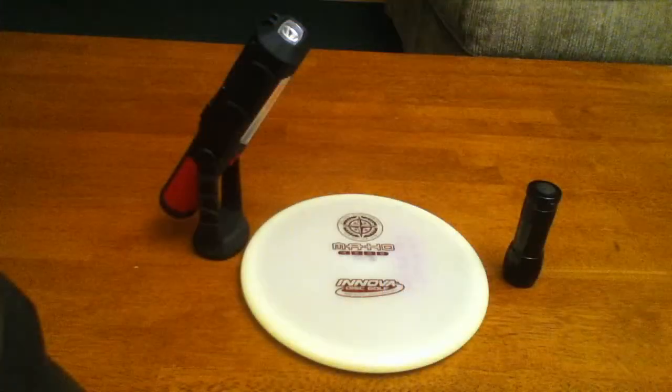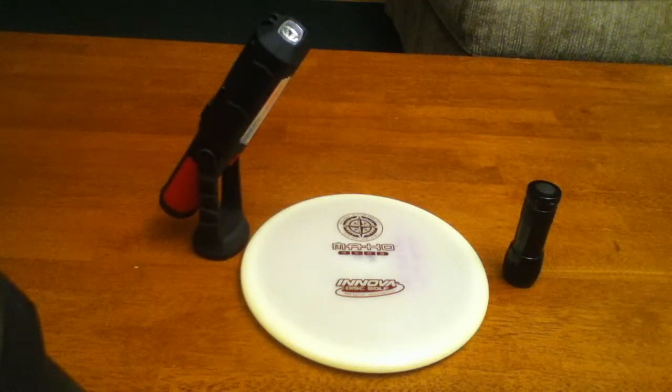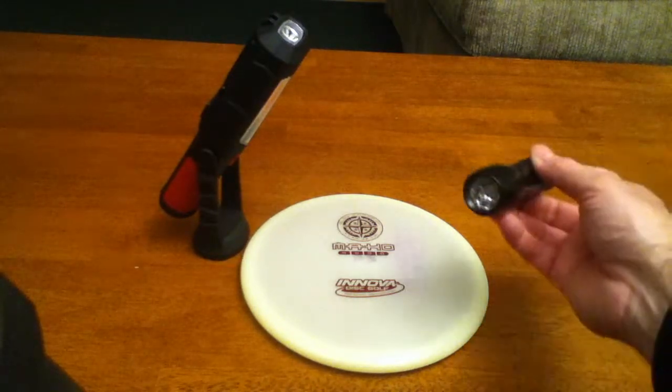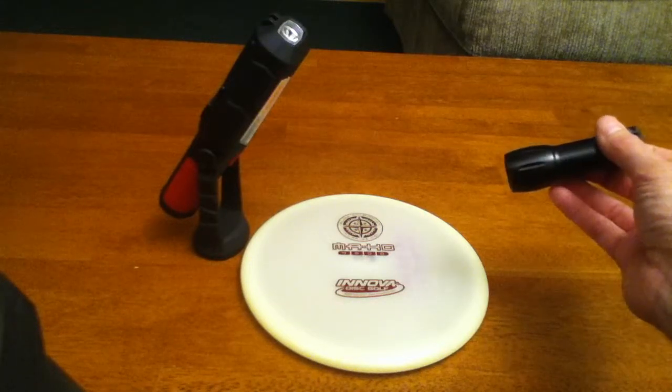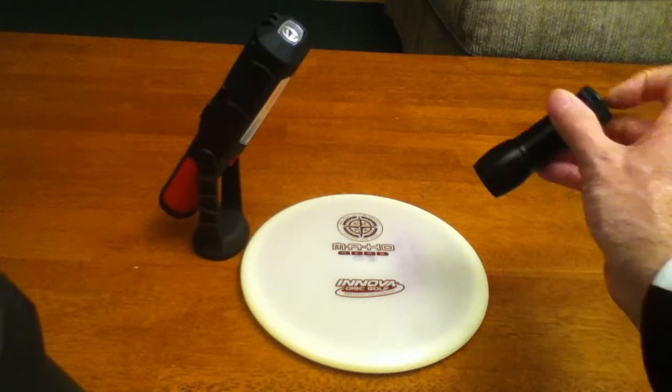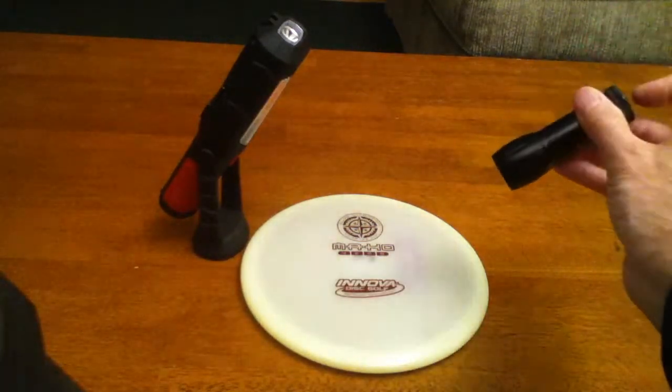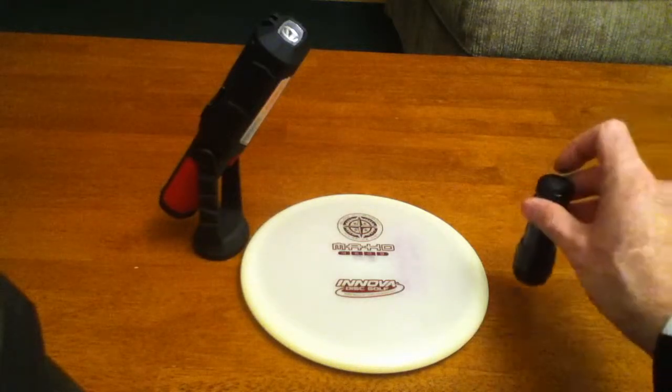For playing glow disc golf at night time, many people will often start using a white light flashlight. And the white light wavelength isn't the best wavelength for energizing a glow disc. I'm going to turn off the light here and give you a quick demonstration.